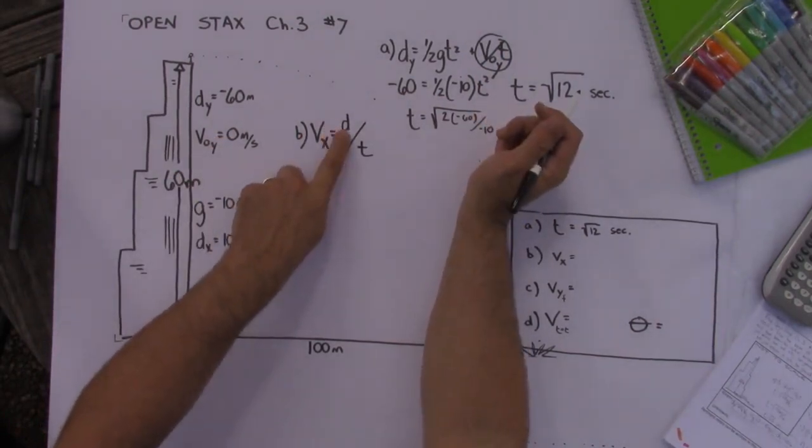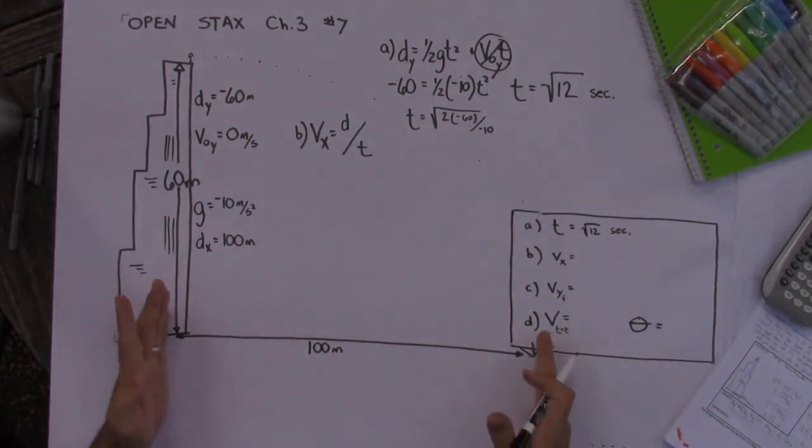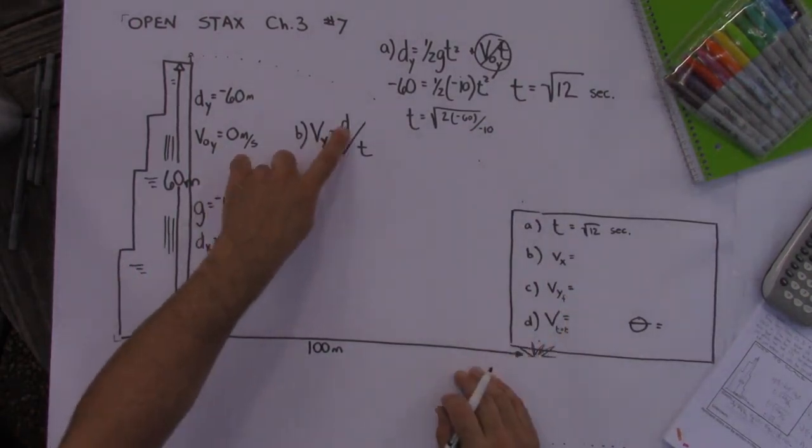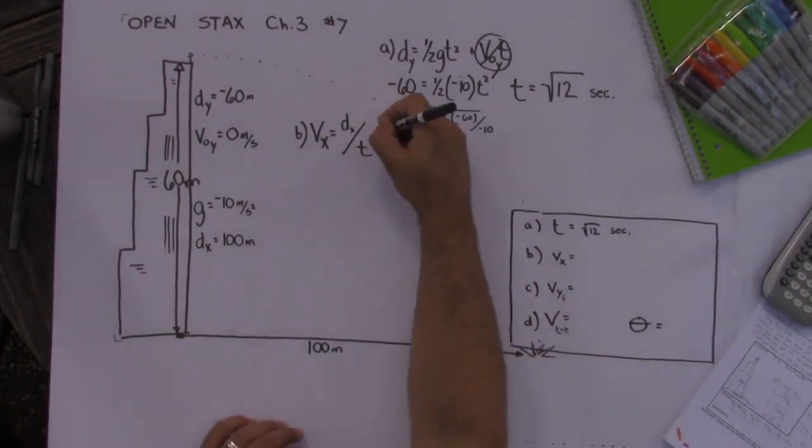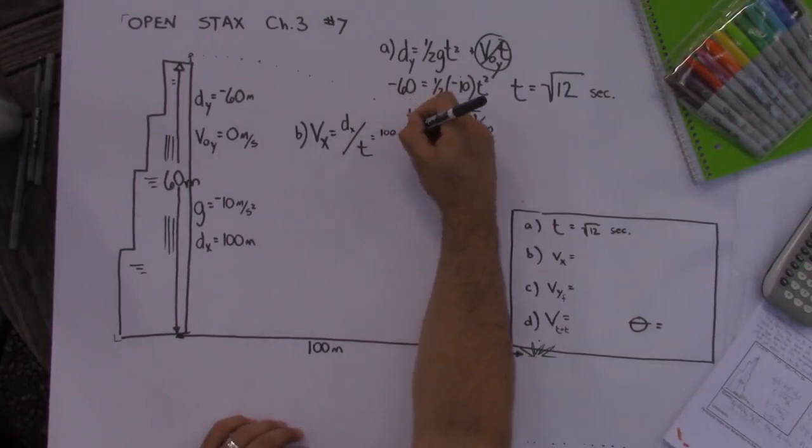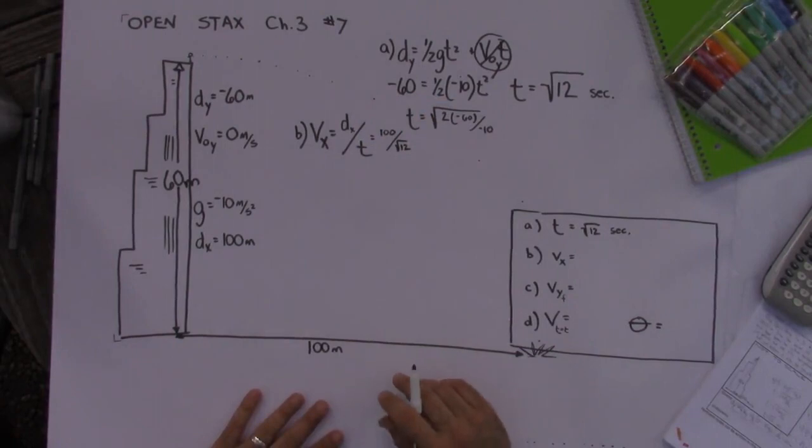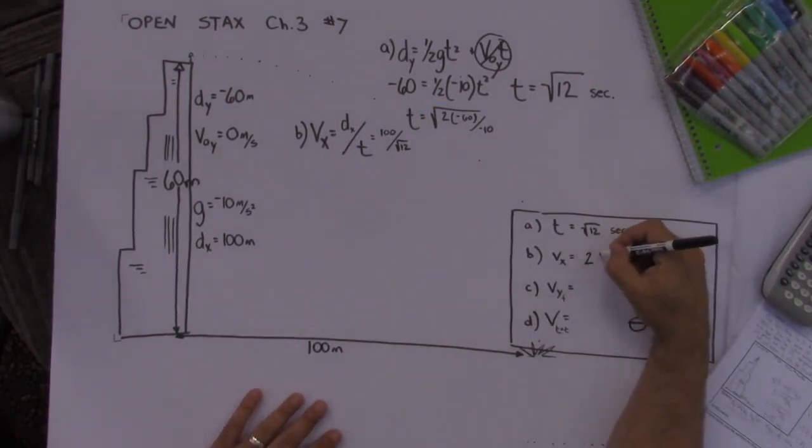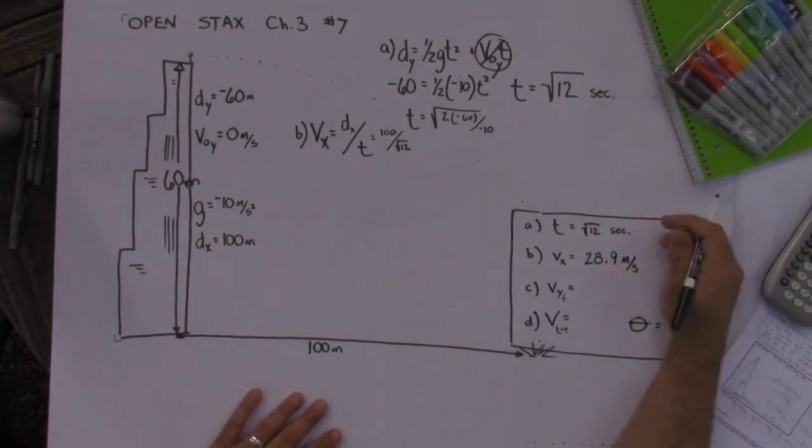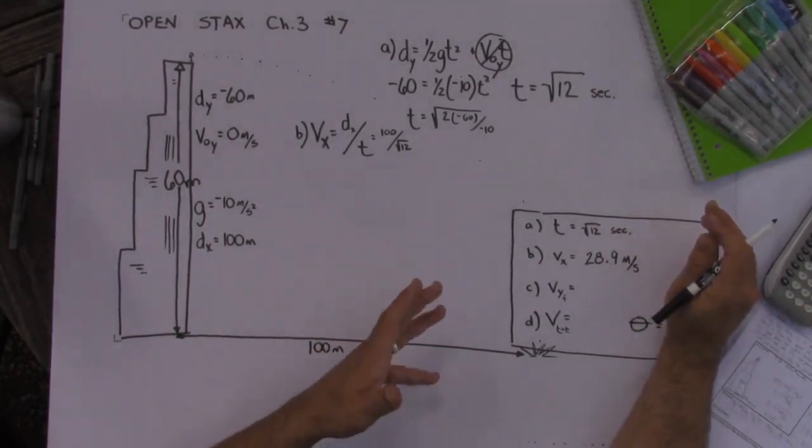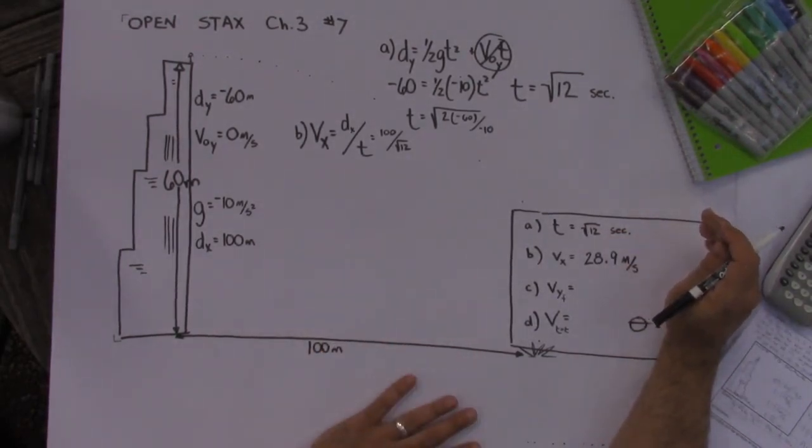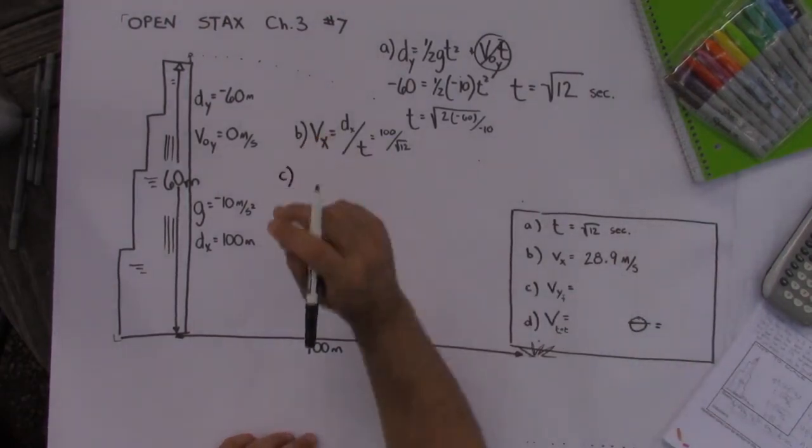Well here I go again with the displacements. I got to be careful not to put the y displacement there. I got to use the x displacement. Since I got the velocity in the x I have to use a displacement in the x. So I end up with 100 meters over root 12 seconds which gives me an initial velocity in the x direction of about 28.9 meters per second. Now you might have a slightly different answer if you use 10 for gravity so as long as we're close that's fine.